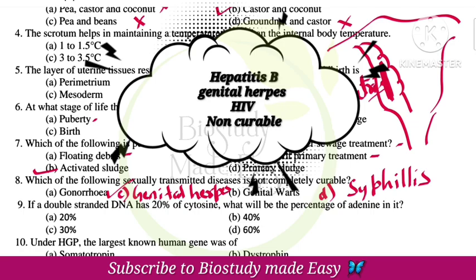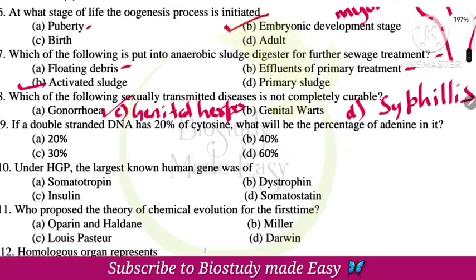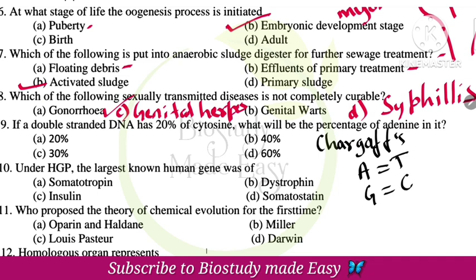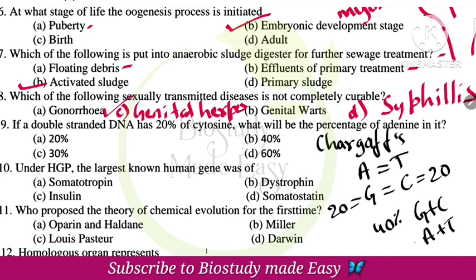If a double-stranded DNA has 20% cytosine, what will be the percentage of adenine? By Chargaff's rule: adenine pairs with thymine, guanine pairs with cytosine. If cytosine is 20%, then guanine is also 20%, giving G+C = 40%. The remaining 60% is shared equally by adenine and thymine — so adenine is 30% and thymine is 30%.